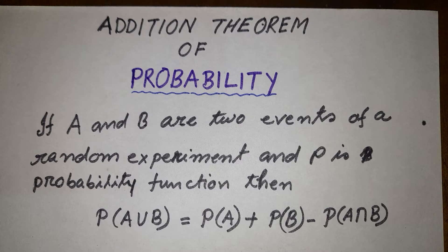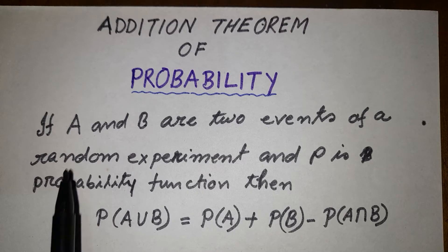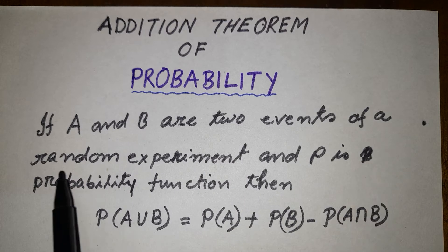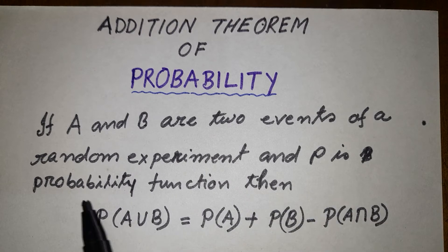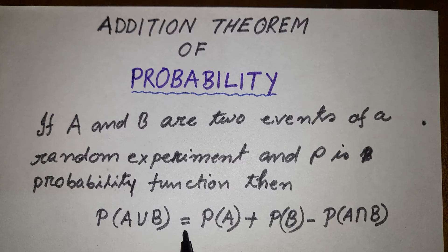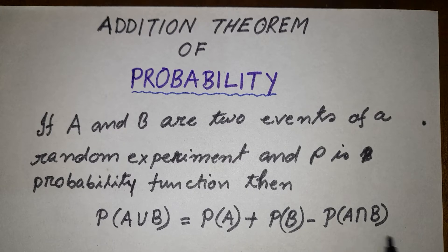Hello viewers. In this presentation we state and prove the Addition theorem of probability. The statement of the theorem is that if A and B are two events of a random experiment and P is a probability function, then P of A union B is equal to P of A plus P of B minus P of A intersection B.